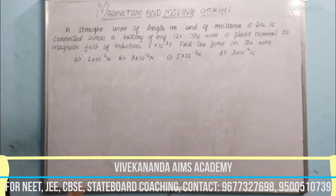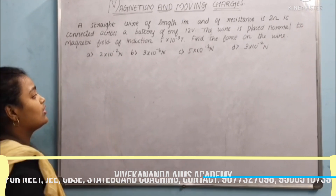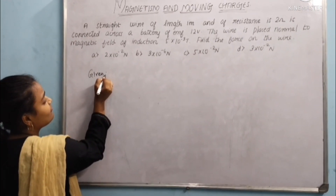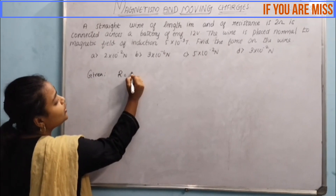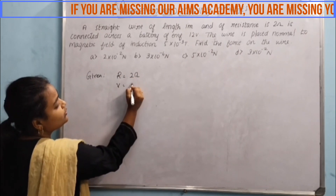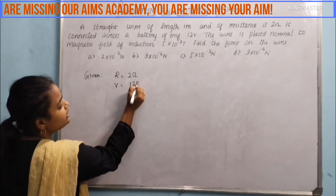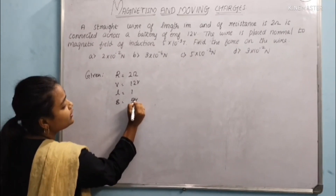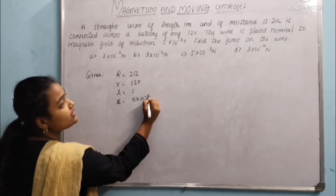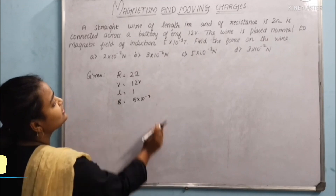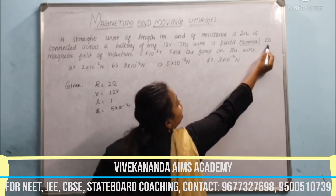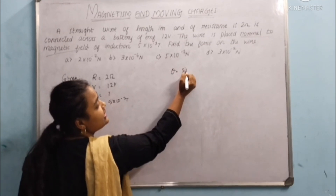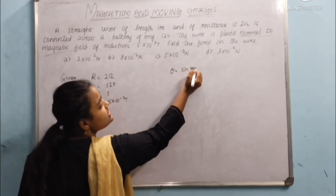First we want to know what is given in this question. The given values are: R is equal to 2 ohm, EMF (V) is equal to 12, L is equal to 1, B is equal to 5 into 10 power minus 3. They gave normal to magnetic field, so the theta value — sin 90 degree — is 1.